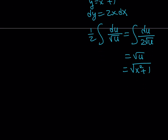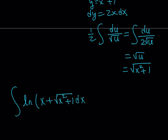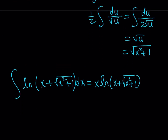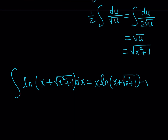When you put it all together — we were trying to integrate ln of x plus the square root of x squared plus 1, dx — the result is x times ln of x plus the square root of x squared plus 1, minus the square root of x squared plus 1, plus the constant c. And that concludes this problem.